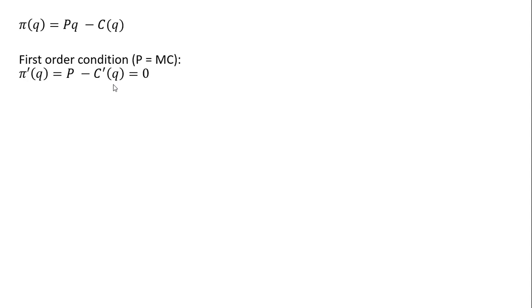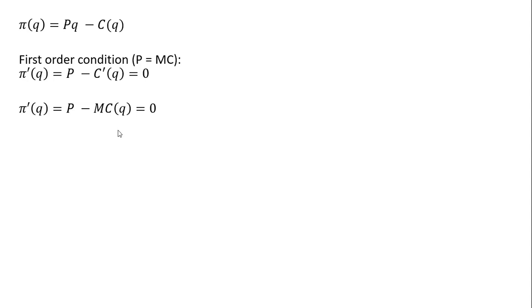In order to maximize profit, we set this first order condition equal to zero. The derivative of the cost function is just marginal cost, so I'll make that substitution. C prime is just marginal cost, where marginal cost is a function of quantity. So the first order condition is price minus marginal cost equals zero, or price equals marginal cost.